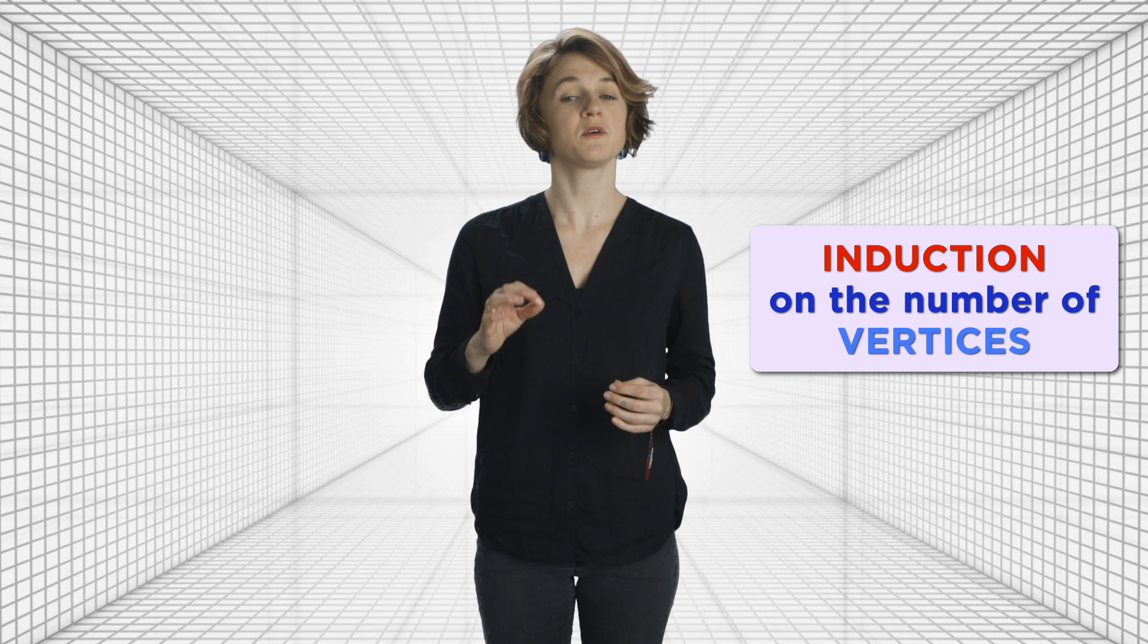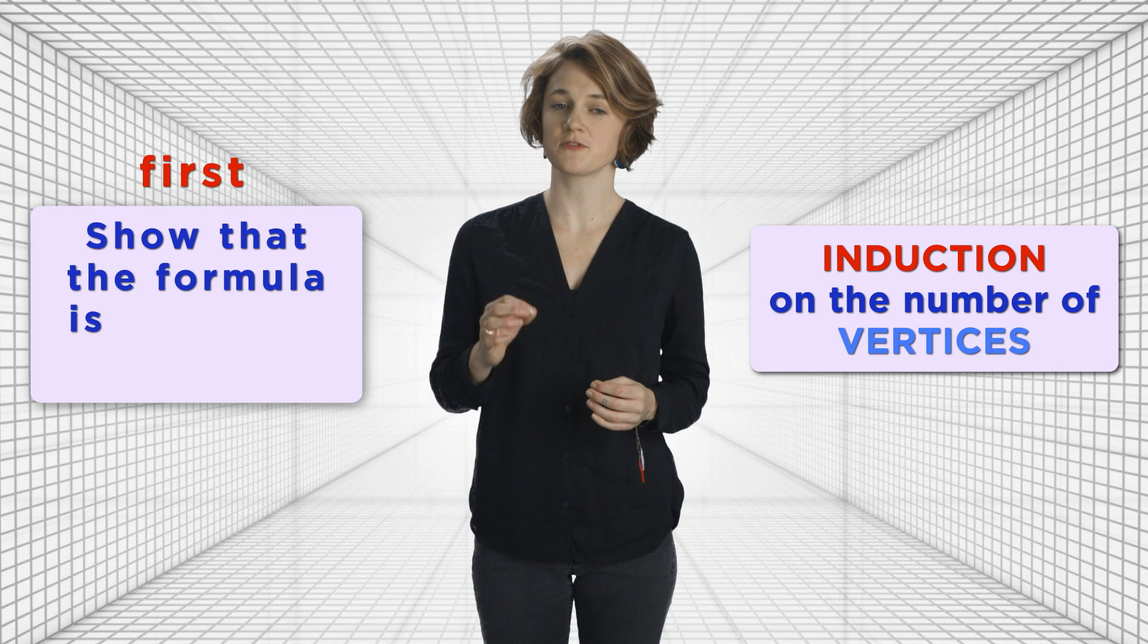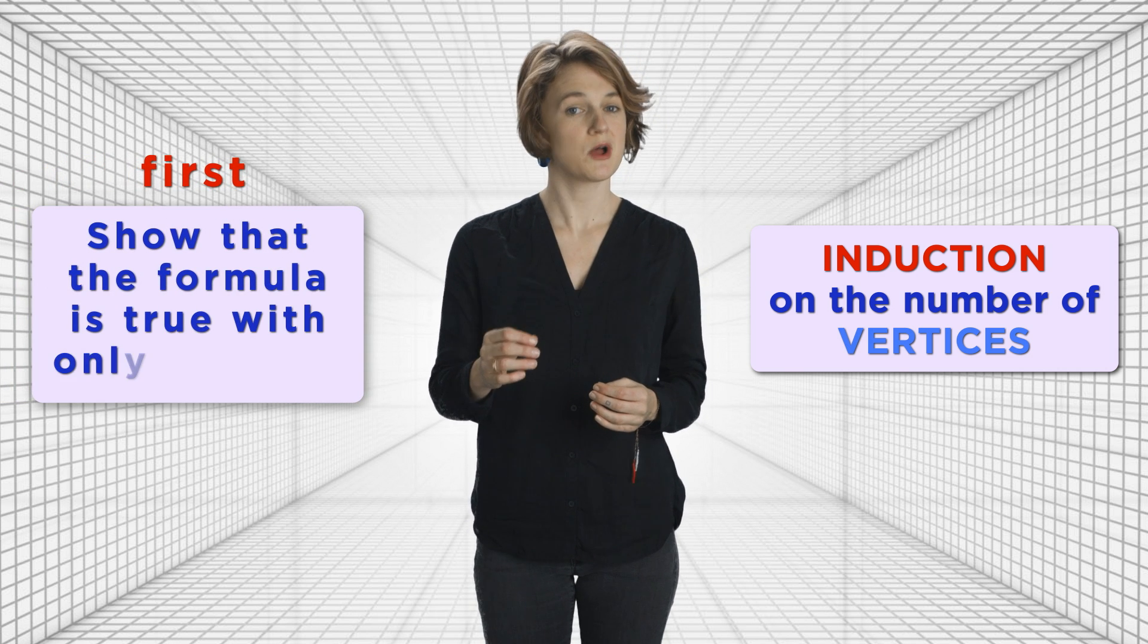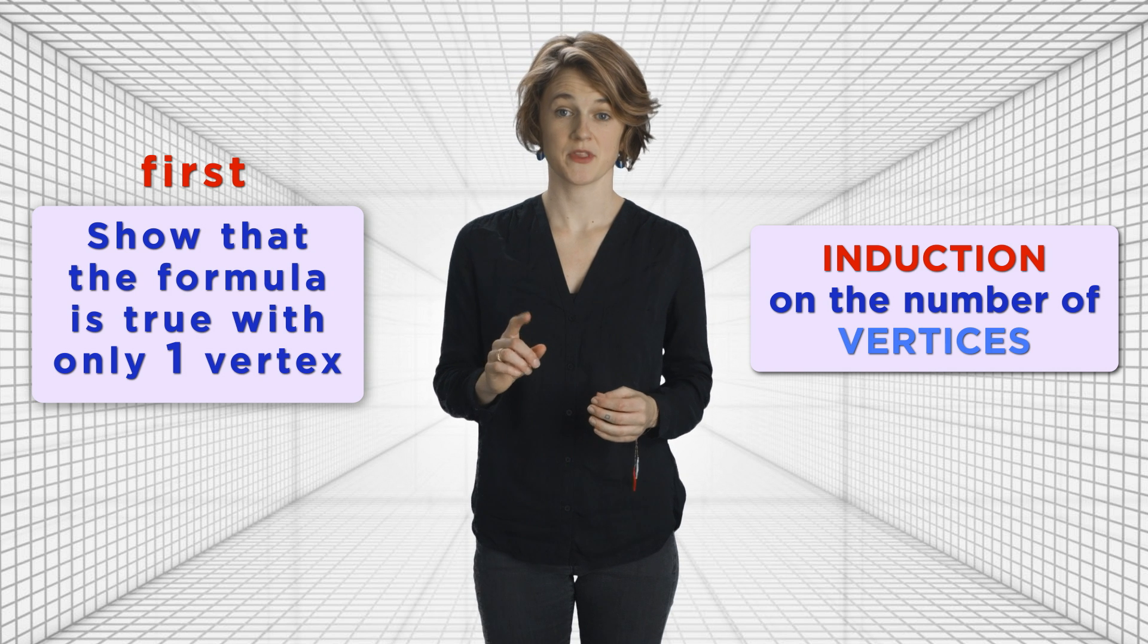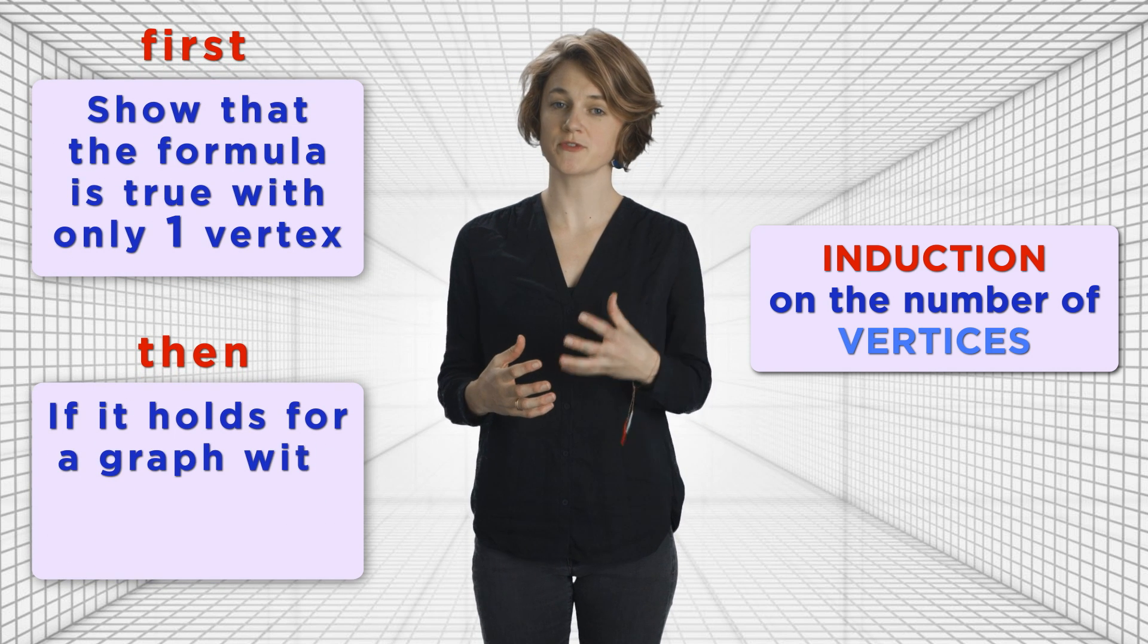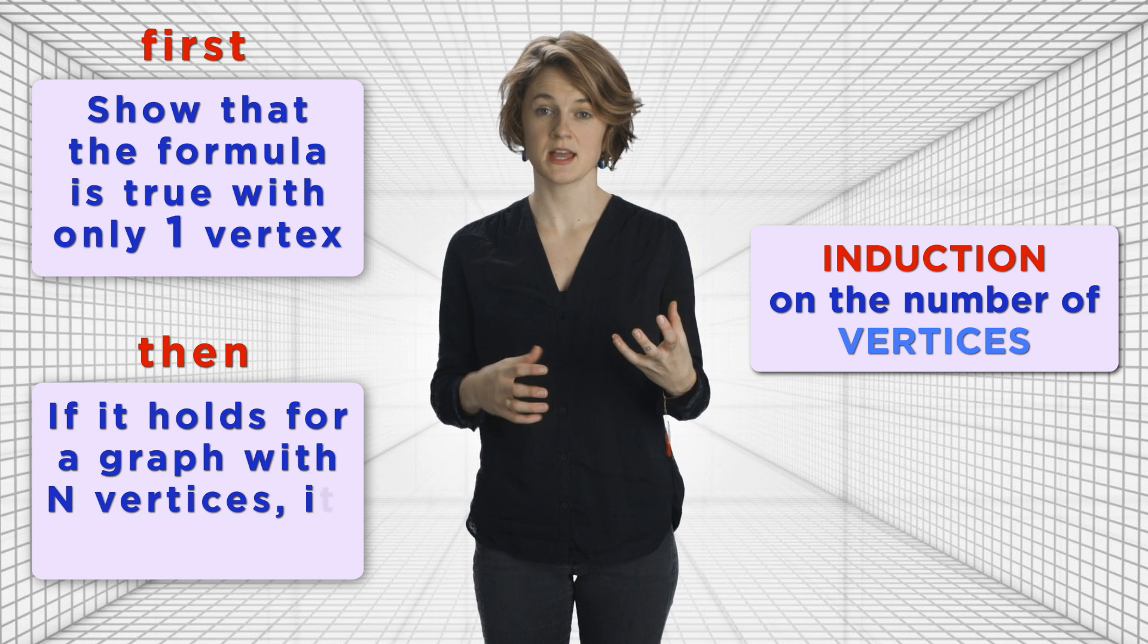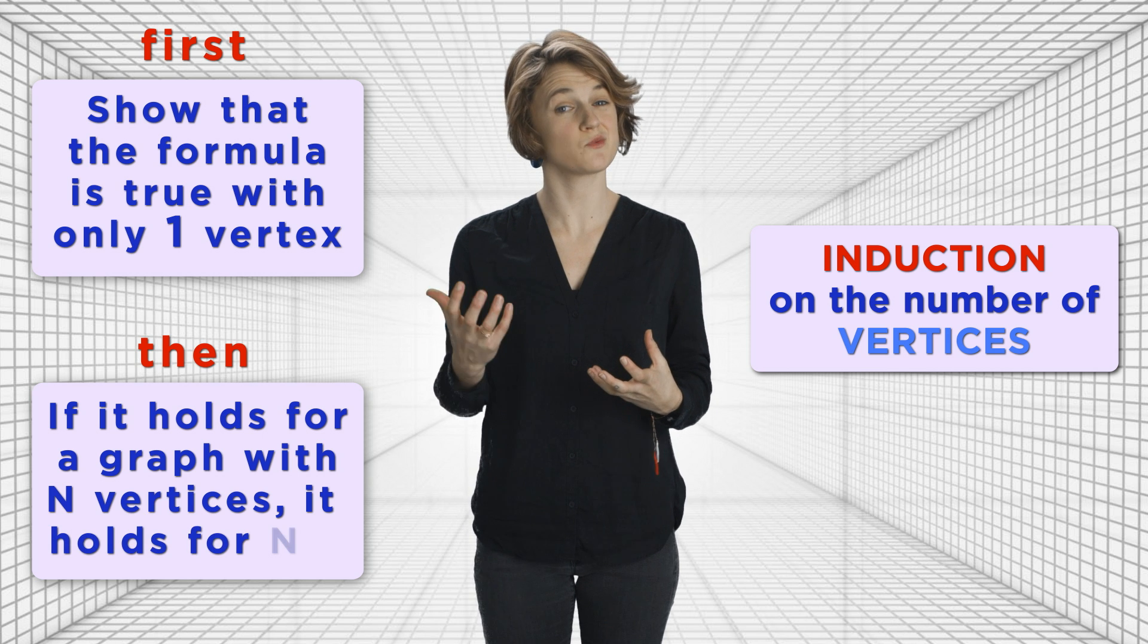Here's my favorite, induction on the number of vertices. Remember from last episode that to prove something by induction, we first show that the formula for Euler's characteristic is true when there's only one vertex. Then we show that if it holds for a graph with n vertices, it holds for a graph with n plus 1 vertices.